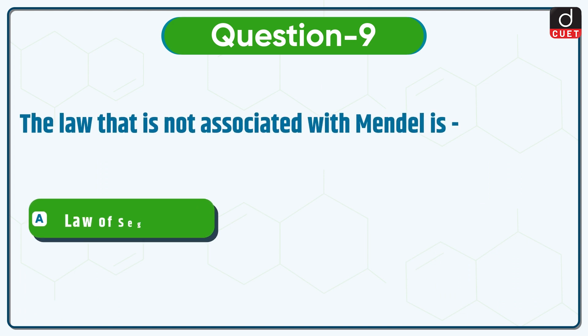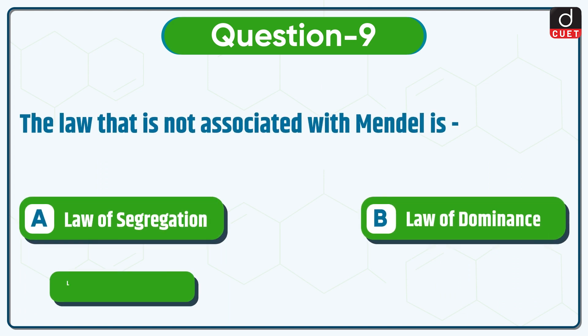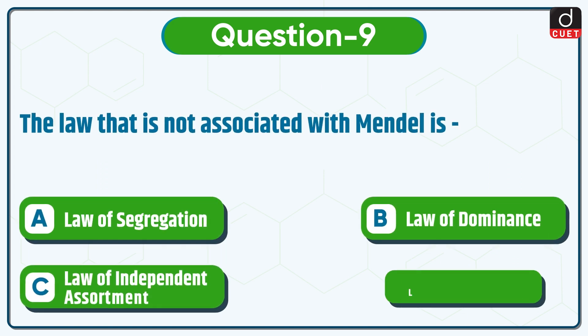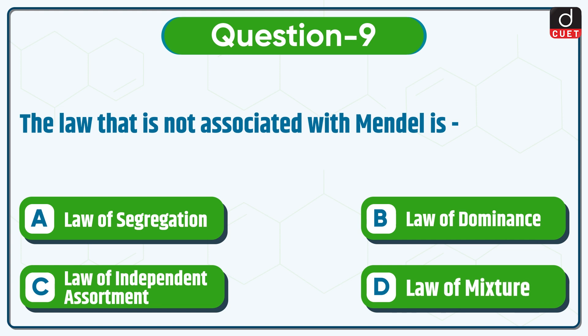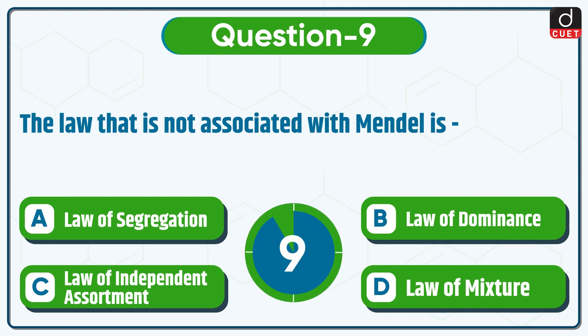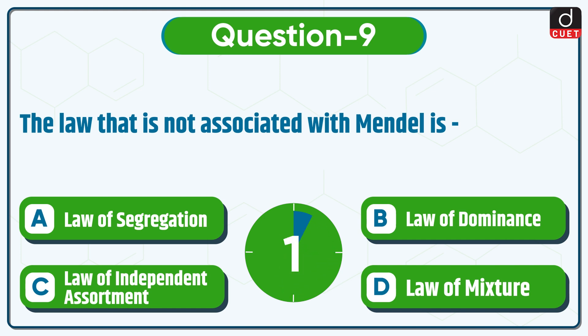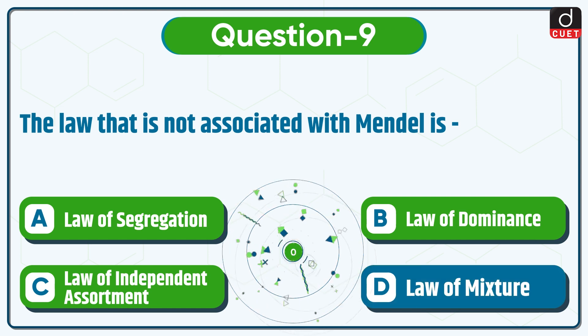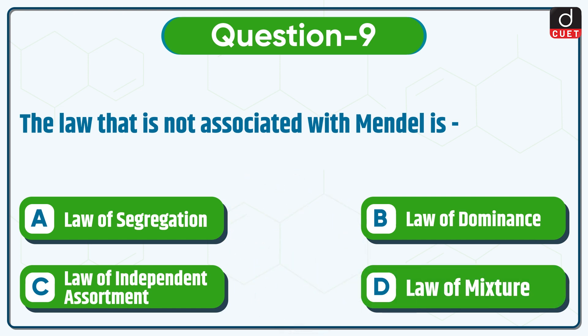Next question is: the law that is not associated with Mendel is the law of segregation, law of dominance, law of independent assortment, or law of mixture? The correct answer is option D, law of mixture.